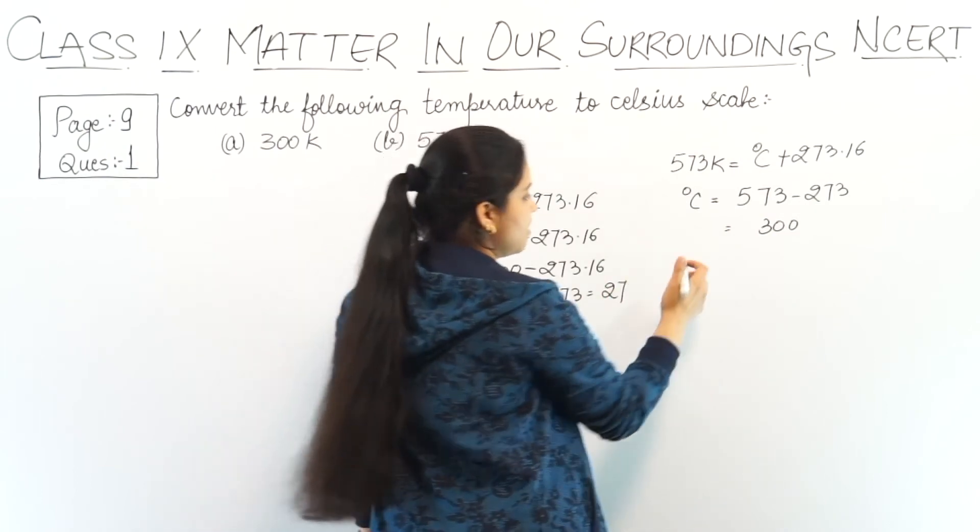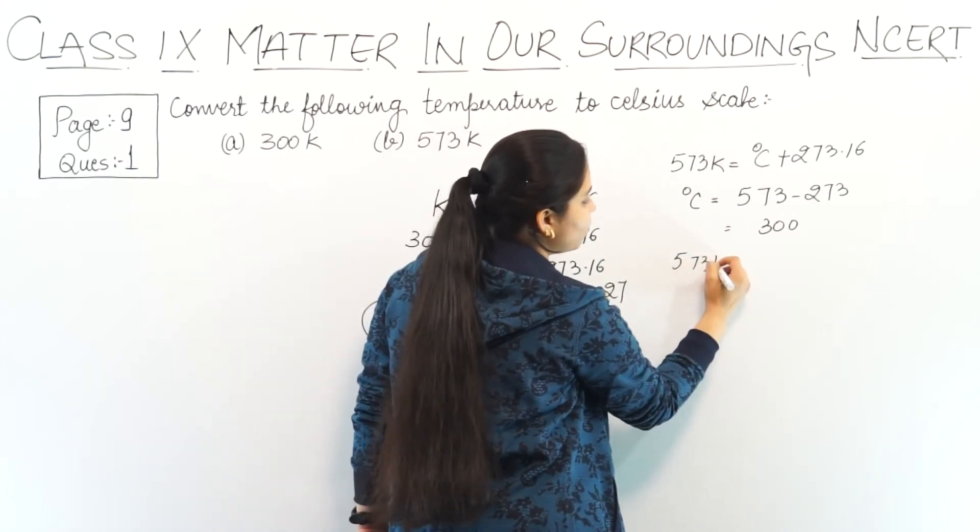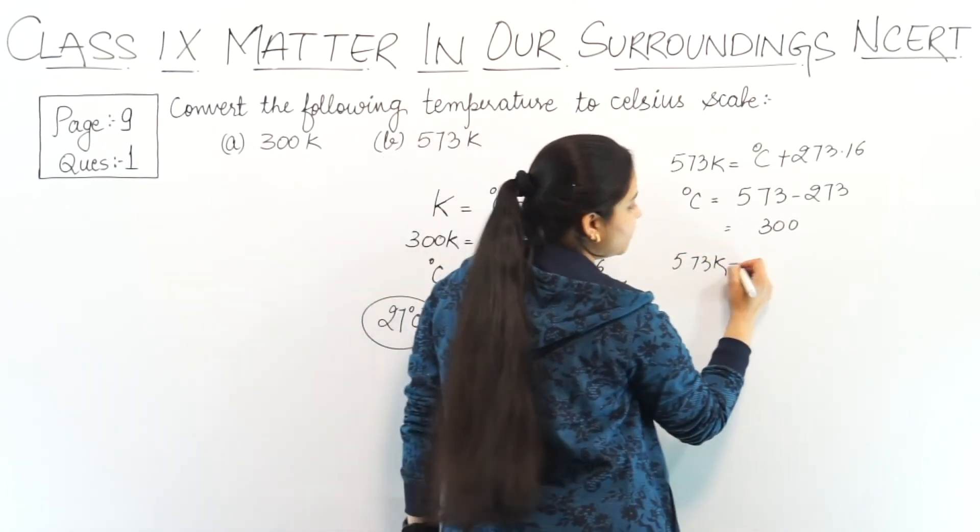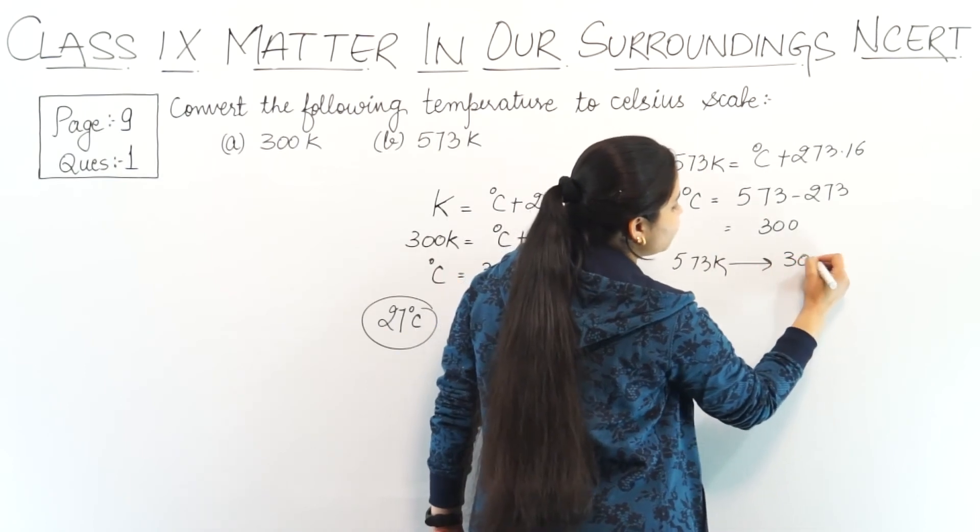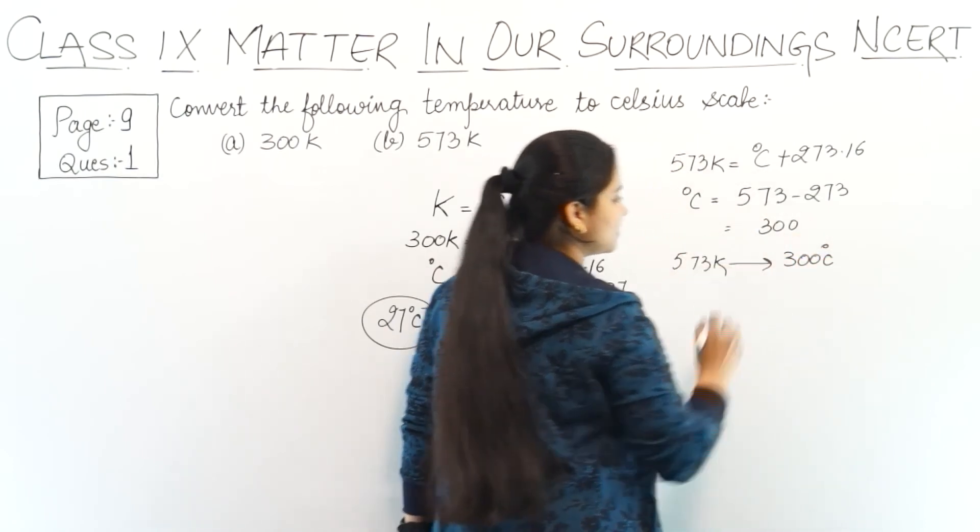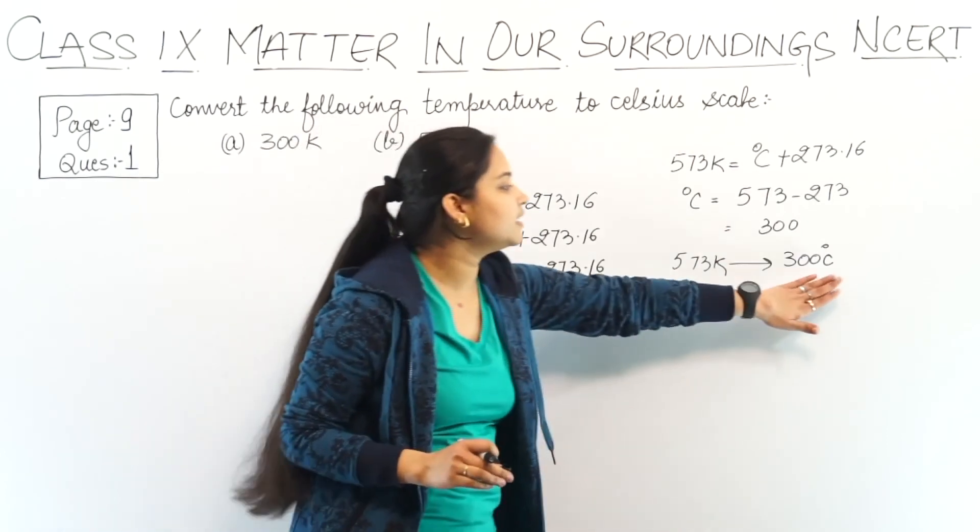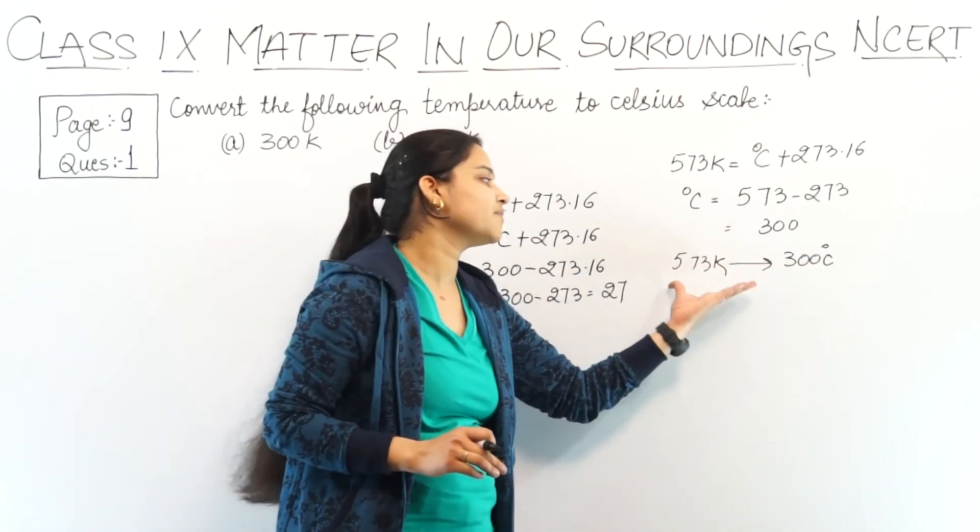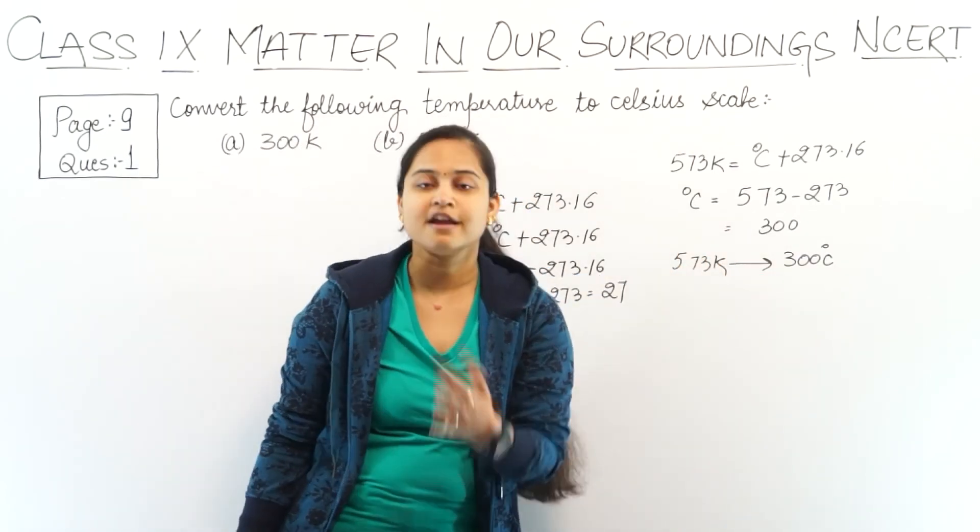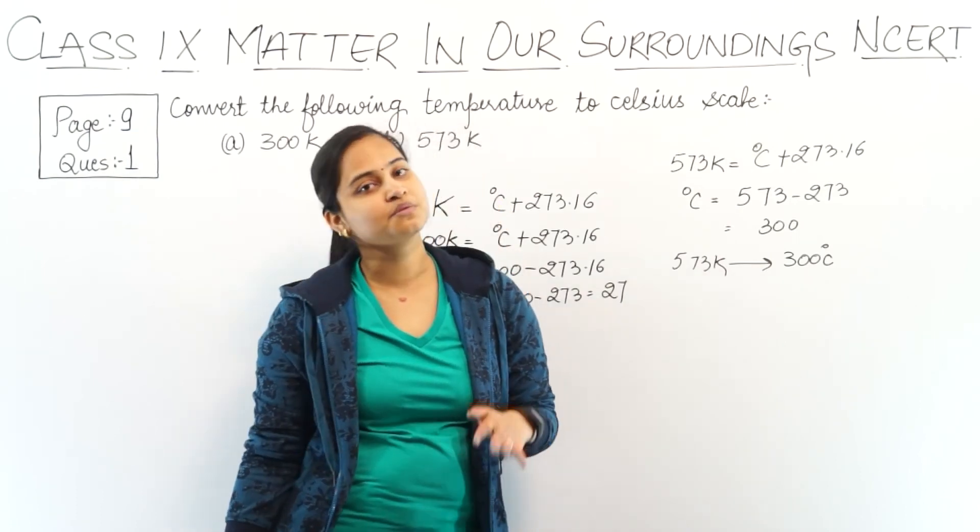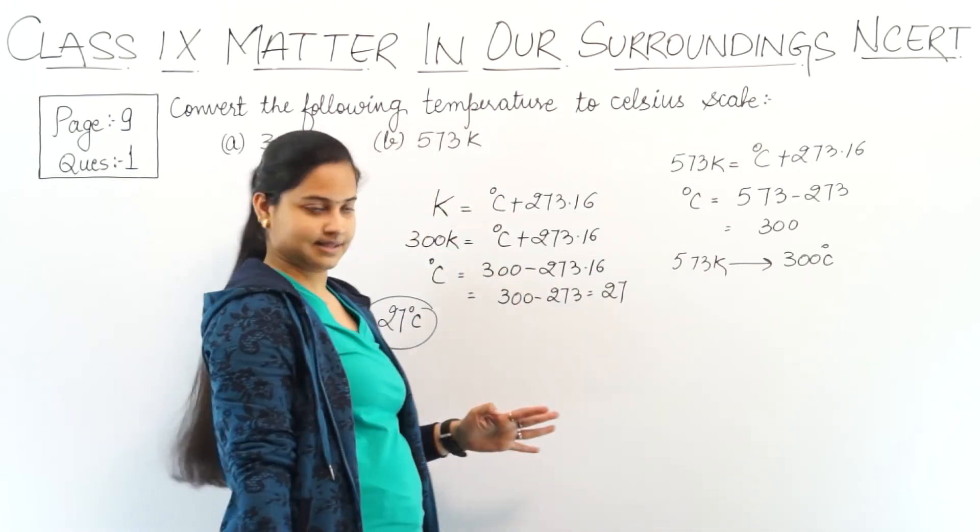So 573 Kelvin converted to degree Celsius is 300 degrees Celsius. We can say 300 degrees Celsius equals 573 Kelvin, or 573 Kelvin equals 300 degrees Celsius.